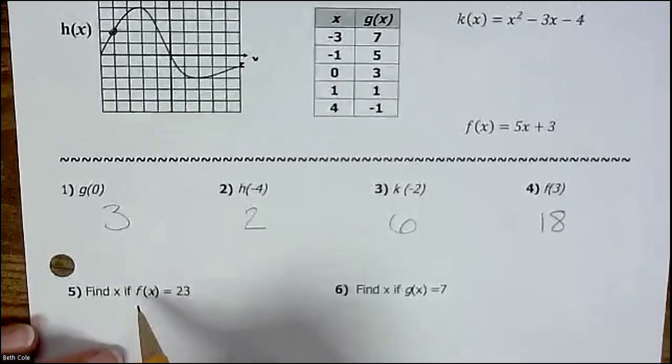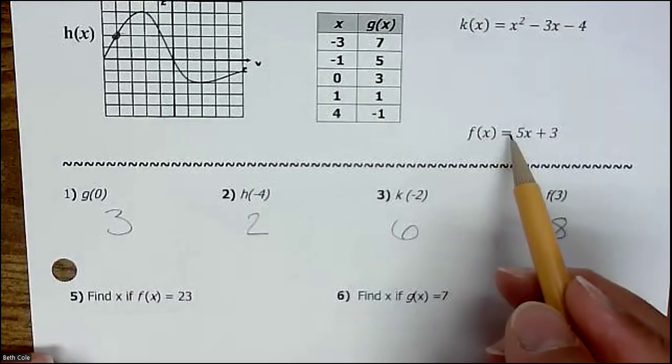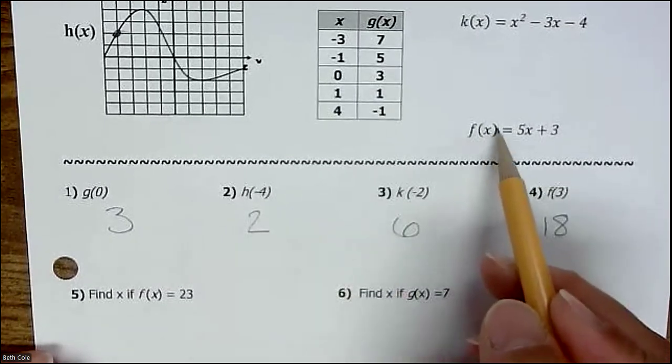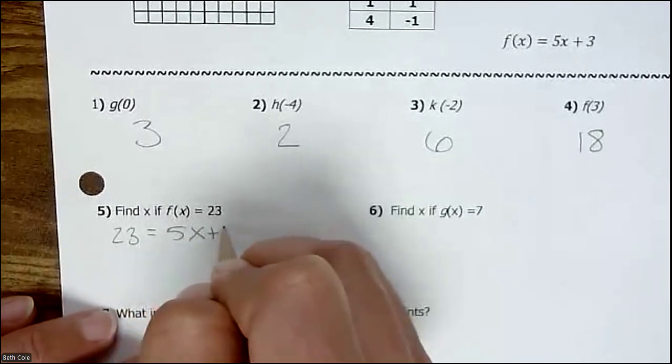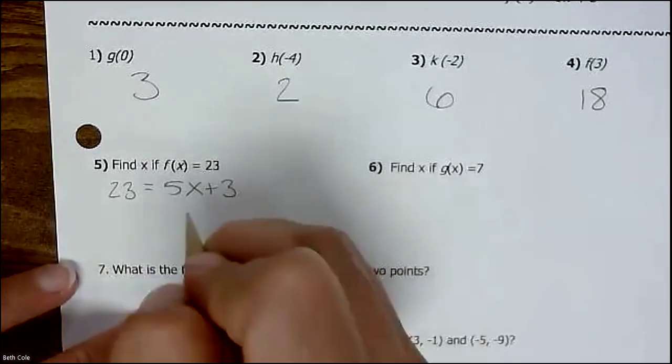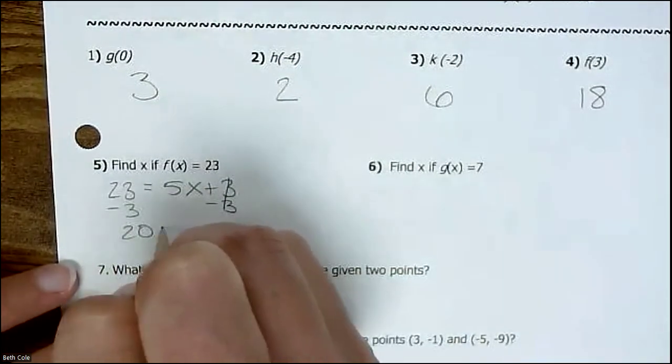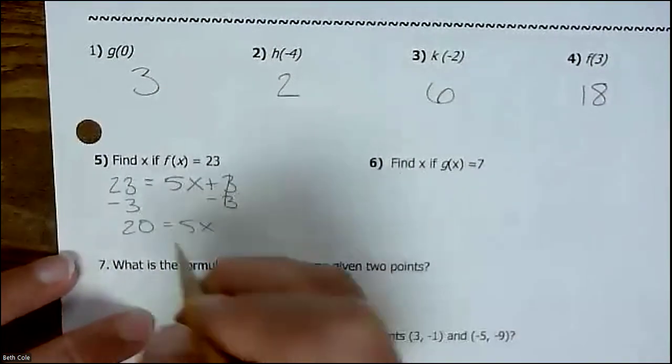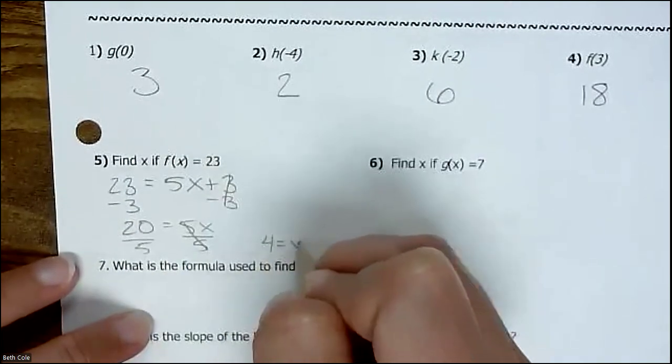Now this one's backwards. It says find x if f of x equals 23. You're going to plug in 23 for the f of x. So it's 23 equals 5x plus 3, and then you have to solve the equation. We're going to subtract 3, get 20 equals 5x, divide by 5, and we get that x is 4.